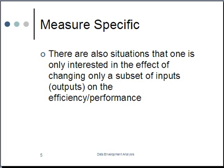Whether a measure is controllable or not, that's one situation. Another situation, let's say given that you have five measures, but you are only interested in a subset of the five measures, you are only interested in the performance of a set of DMUs based upon a subset of the measures.